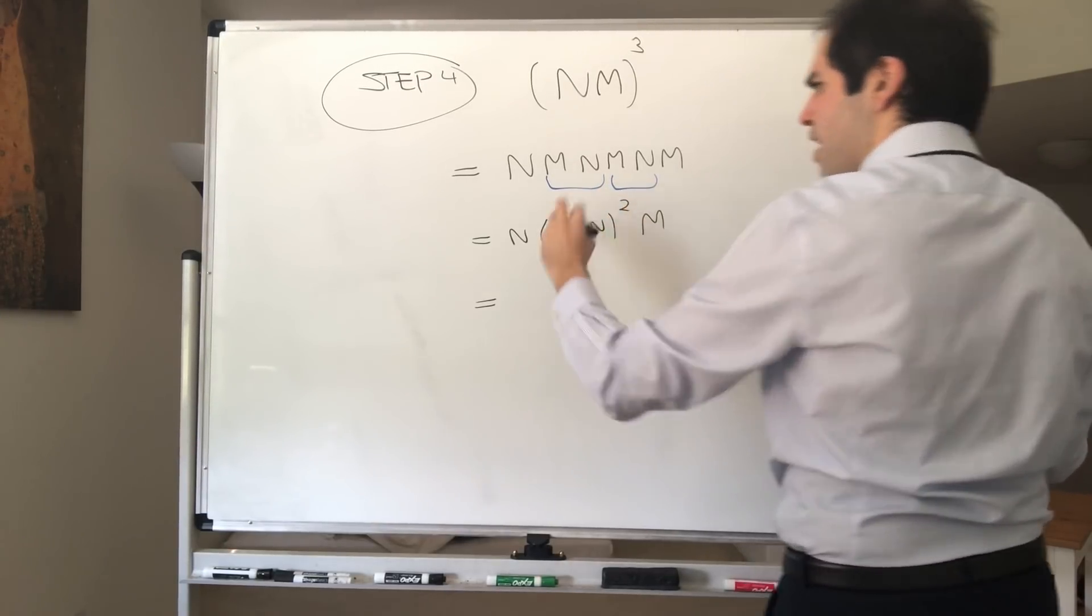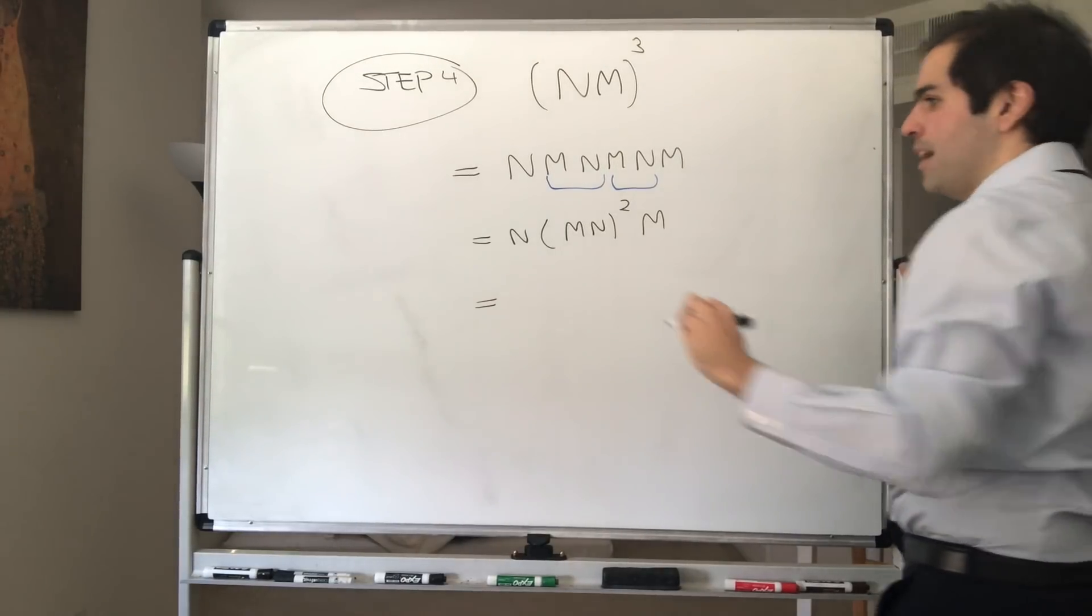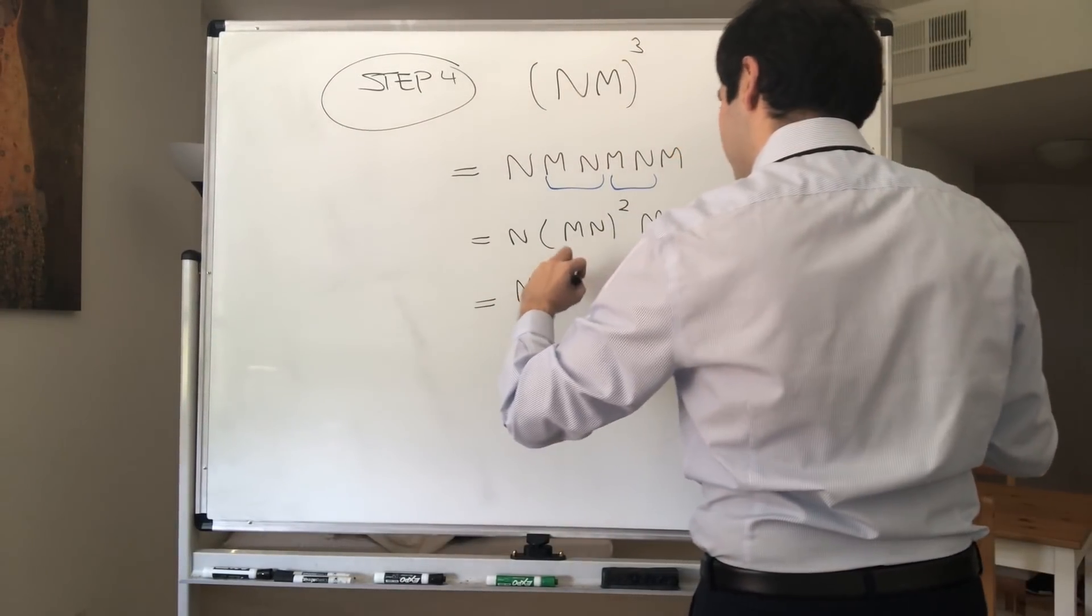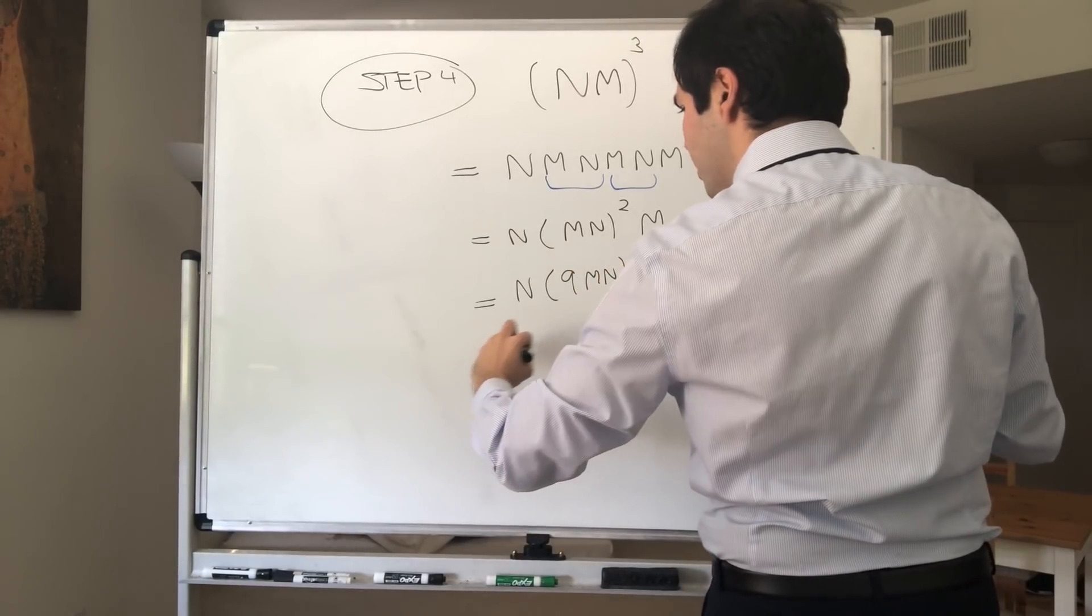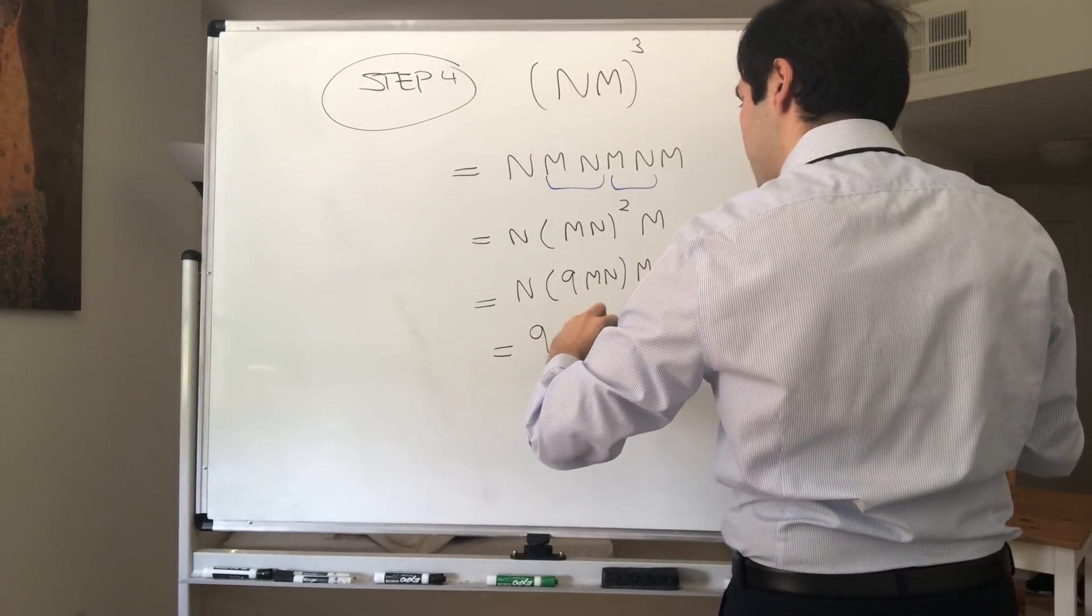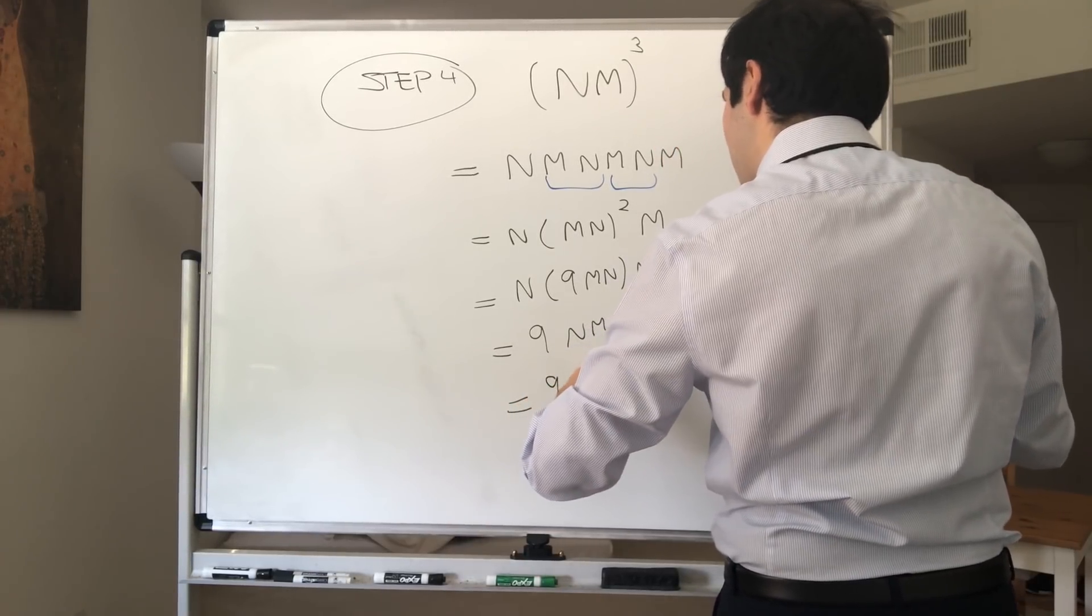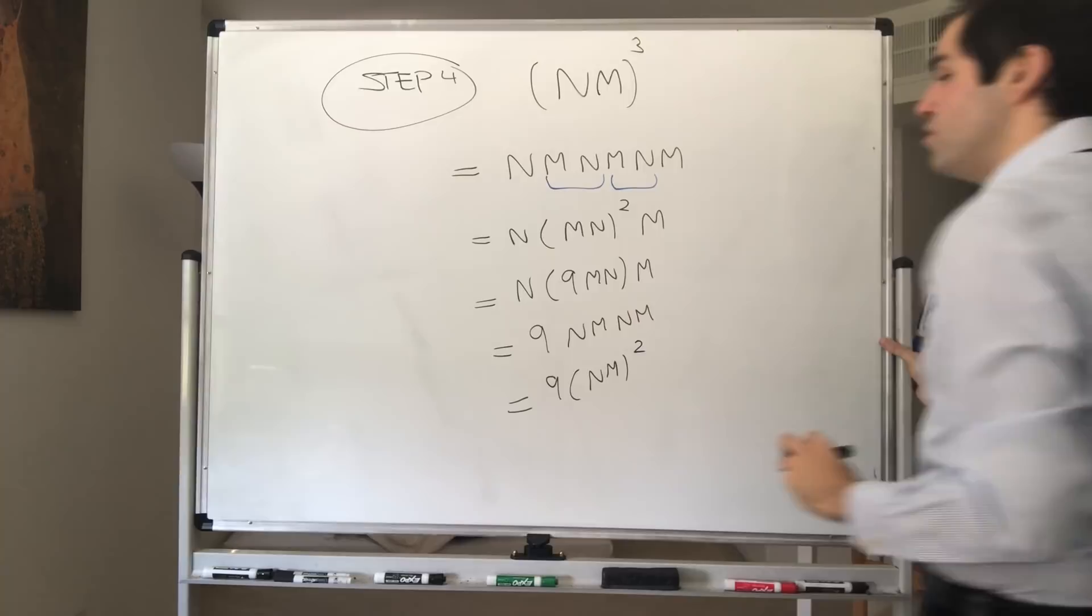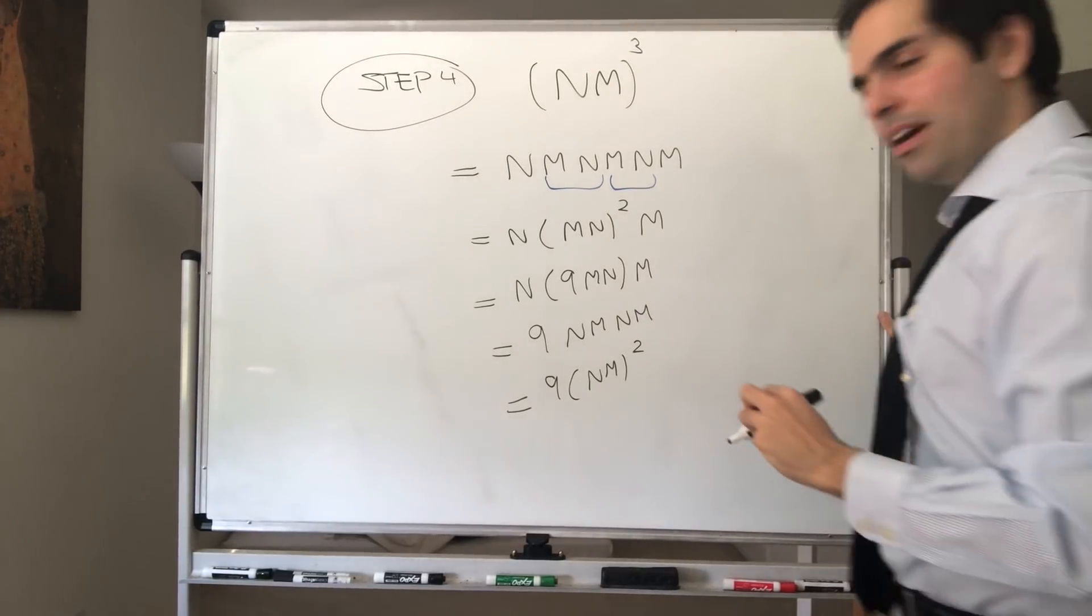So, that's just N times MN squared times MN. But now remember, MN squared is just 9 MN. And, therefore, you get 9 times NM NM, and that's 9 times NM squared. So, what do we get? NM cubed is 9 times NM squared.